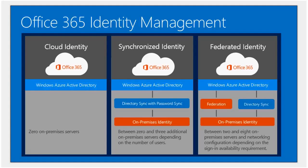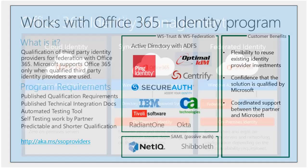The third model is federated identity, which builds on synchronized identity. In addition to synchronizing users up into Office 365, it does the password verification - otherwise known as authentication - on premises. In this model it's not required to synchronize password hashes up into Office 365, because the sign-in request is handled by on-premises servers. Multi-factor authentication works with all three of these models.